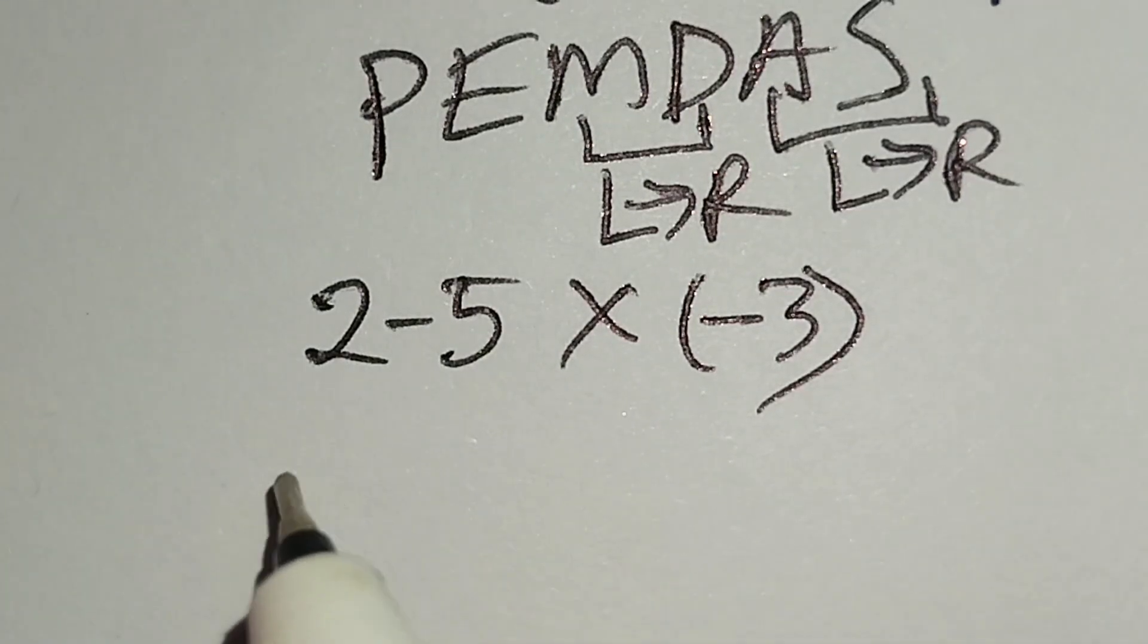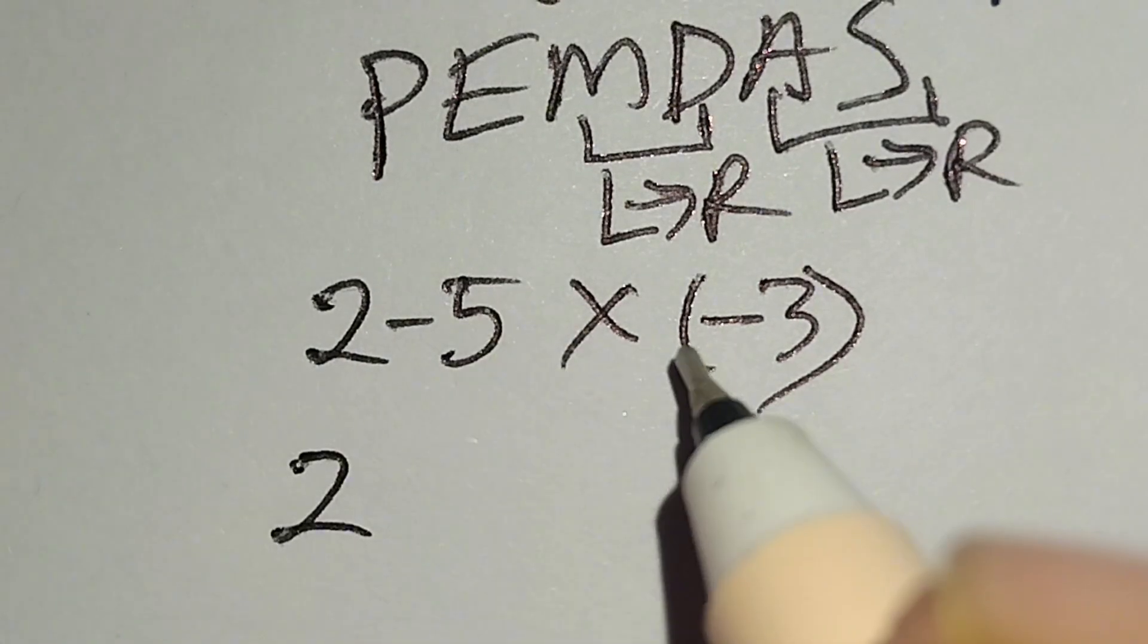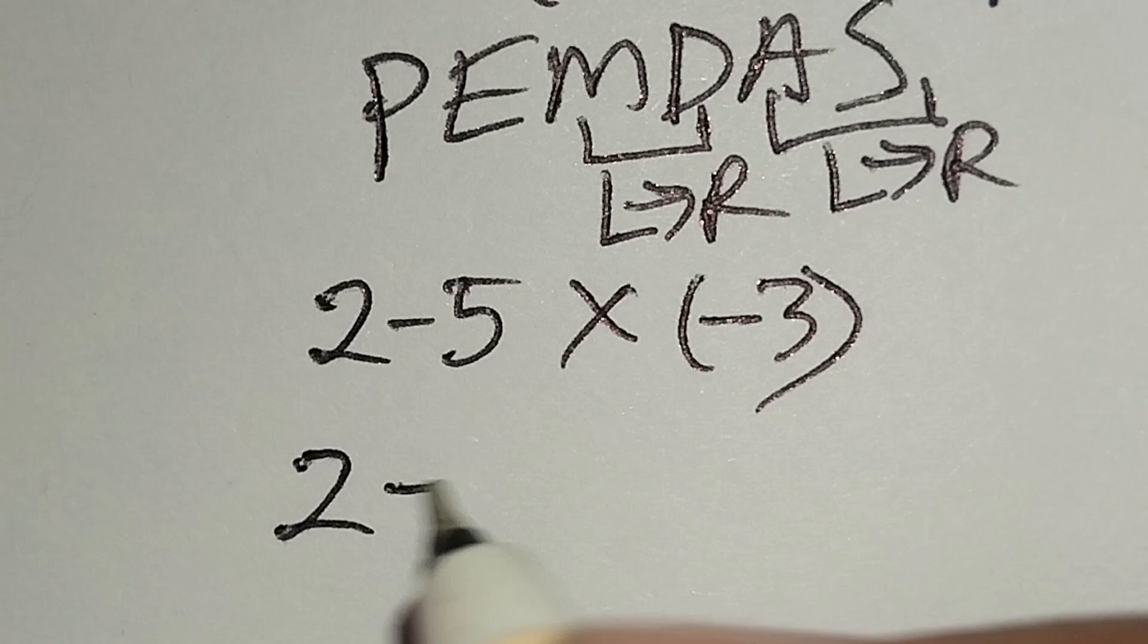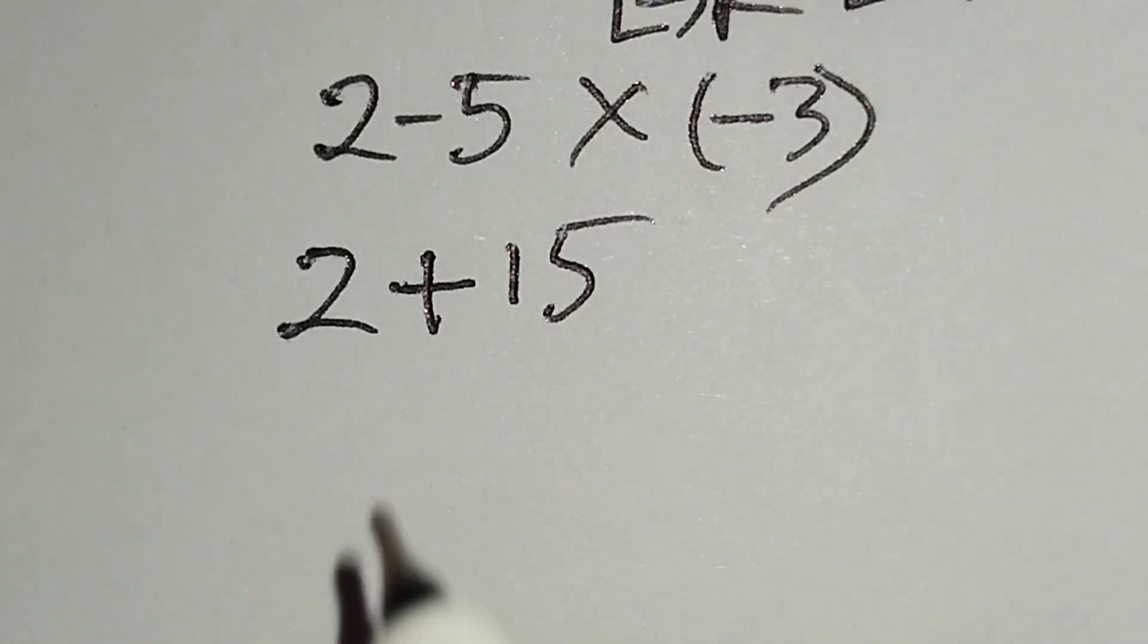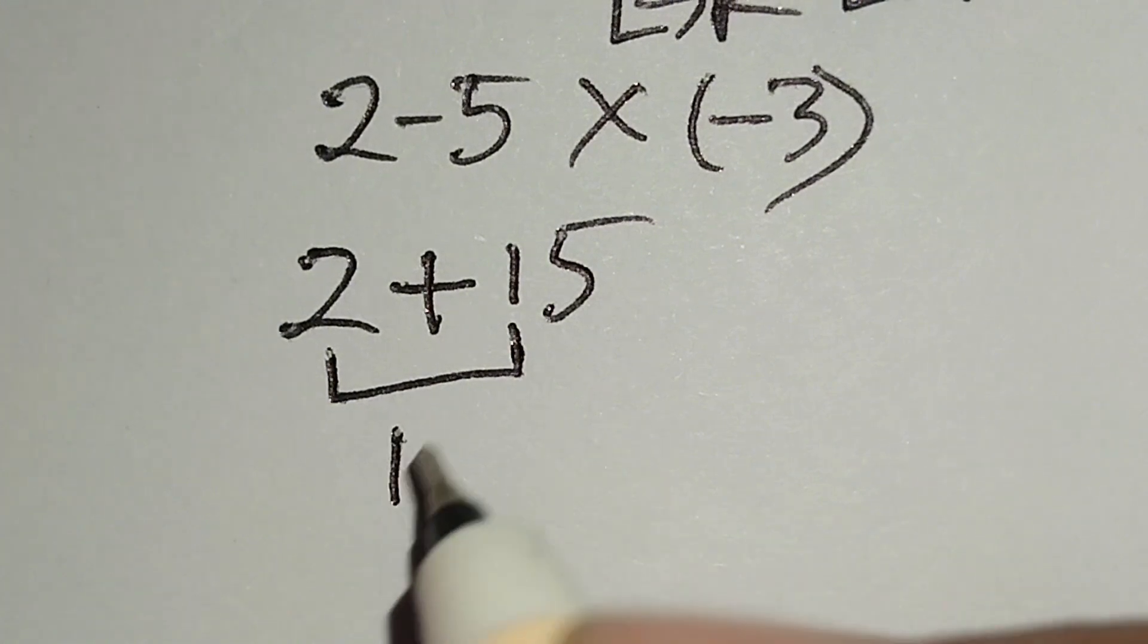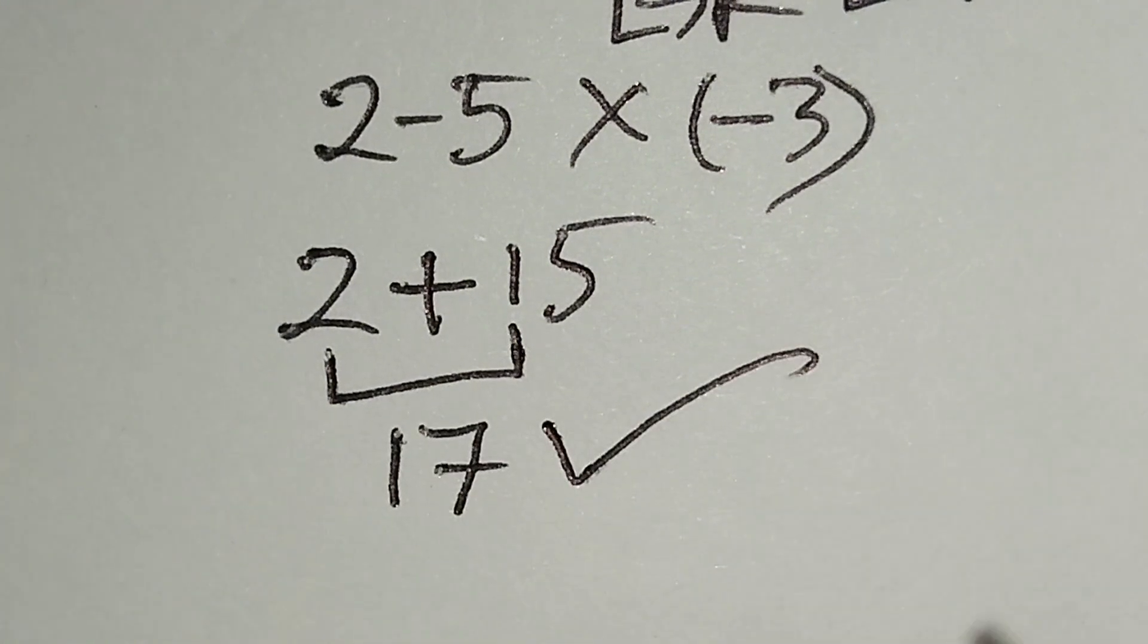Here, this 2. Now negative 5 times negative 3 gives us positive 15. And 2 plus 15 gives us 17. This is the correct answer.